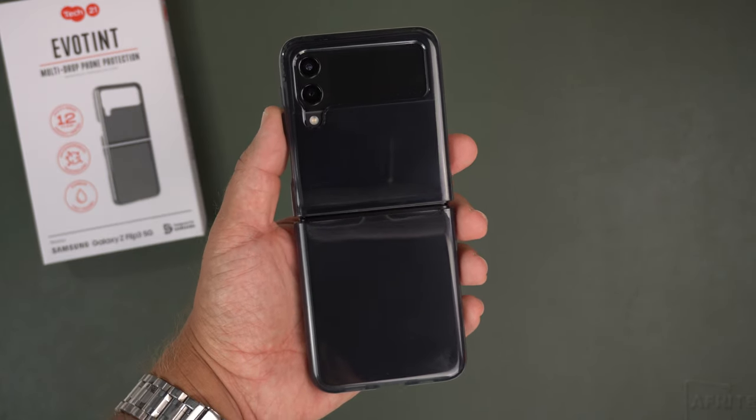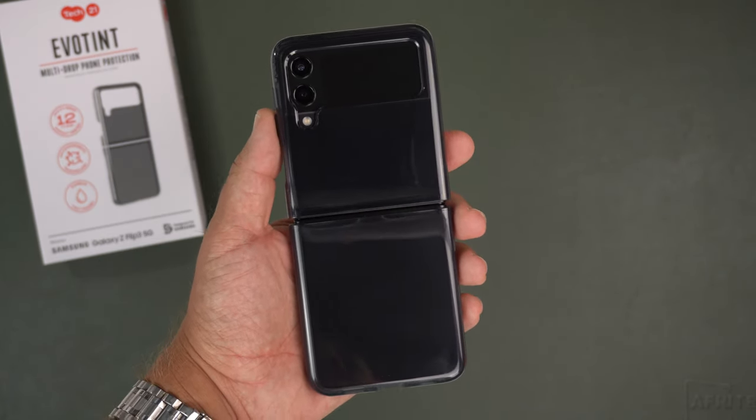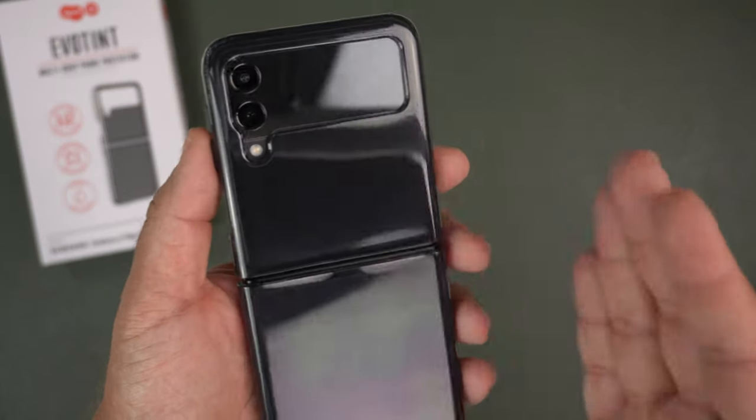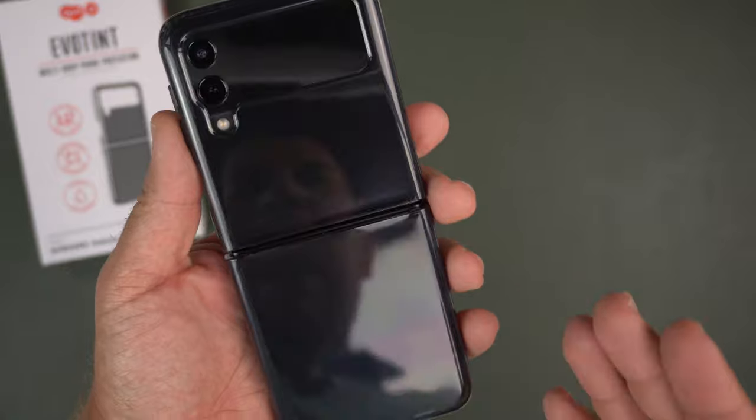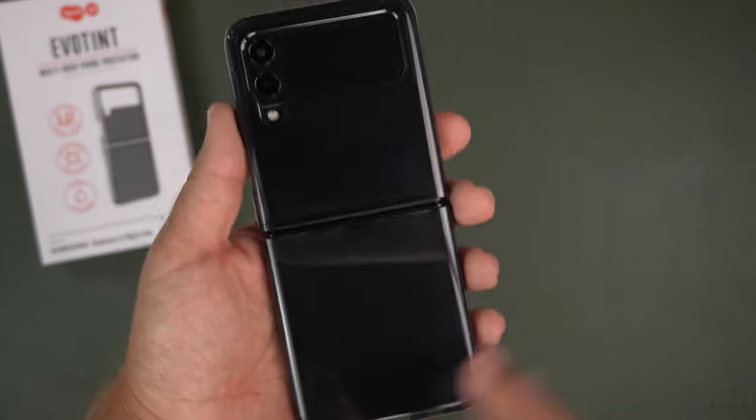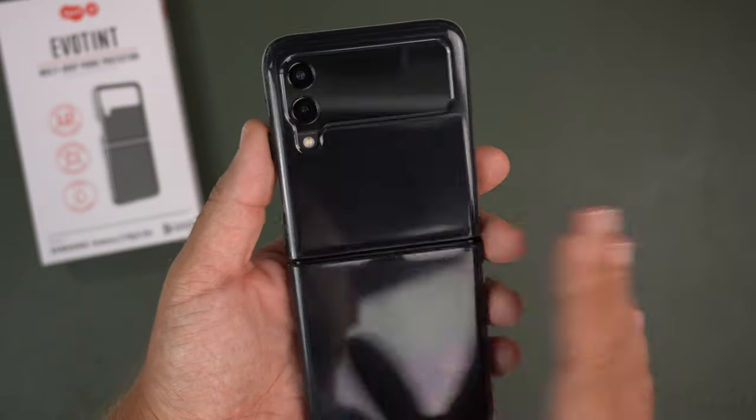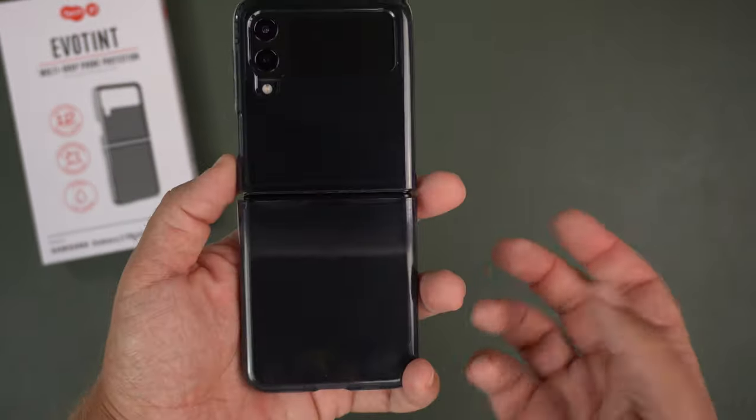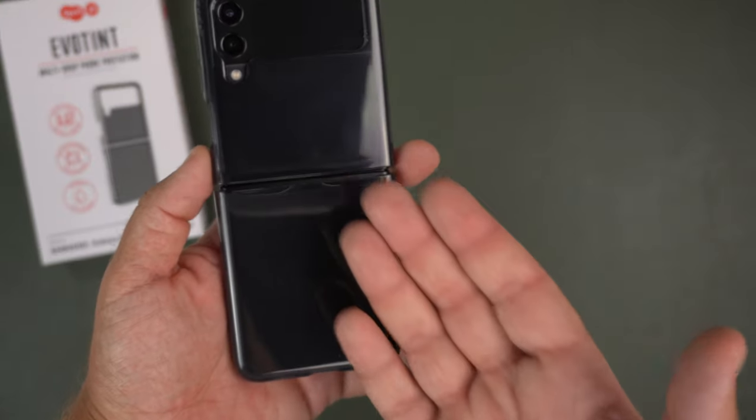As you can see it has that carbon dark tint to it. It's actually really hard to see through. I can't even see the Samsung logo or anything like that. Even though it's semi-translucent, it's really not once you have it on the phone.